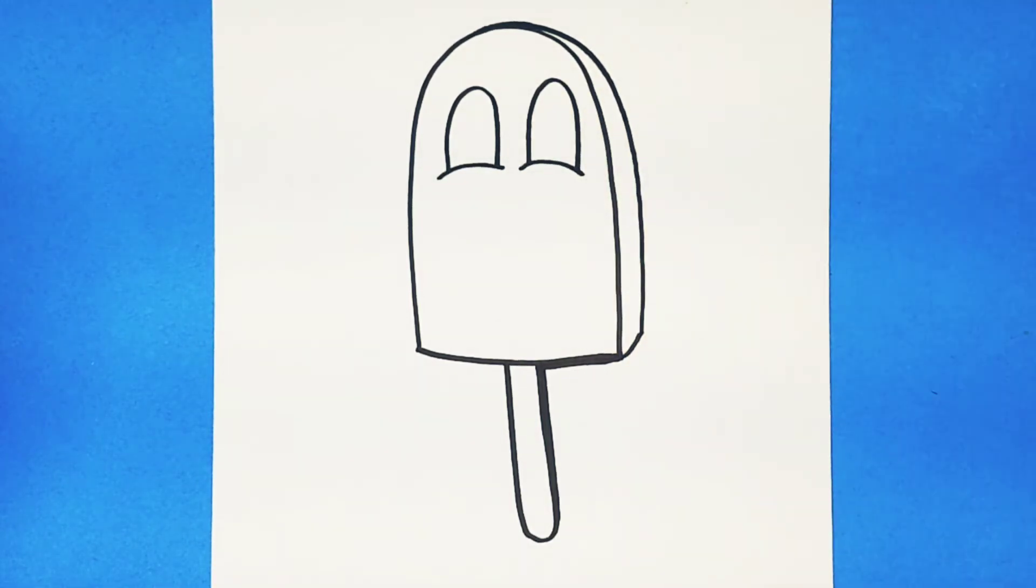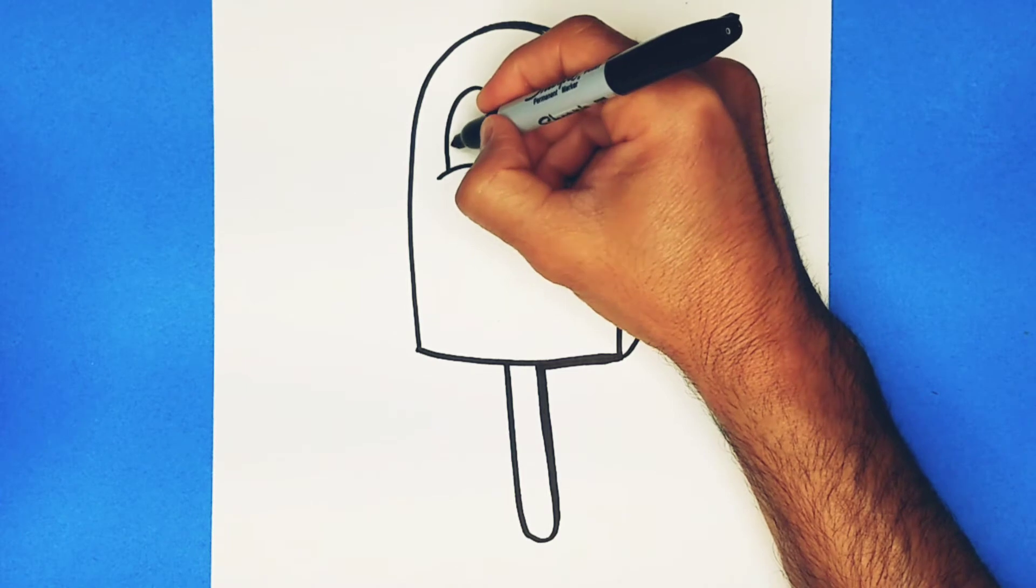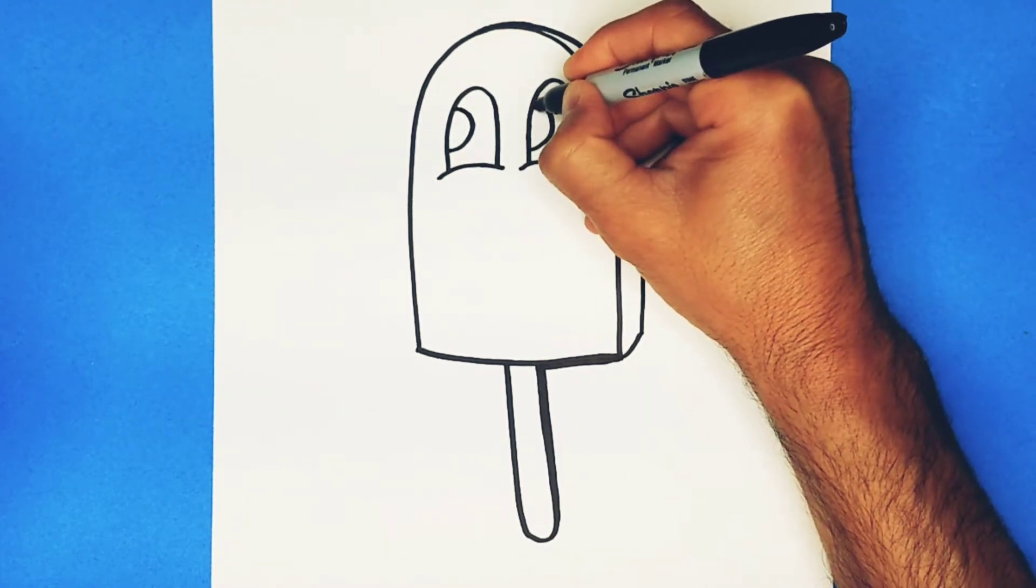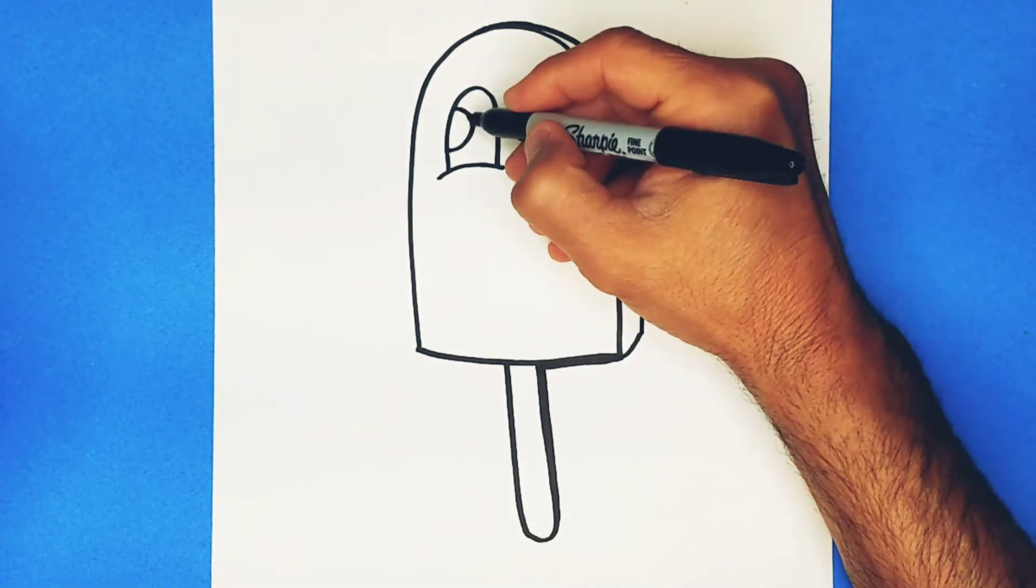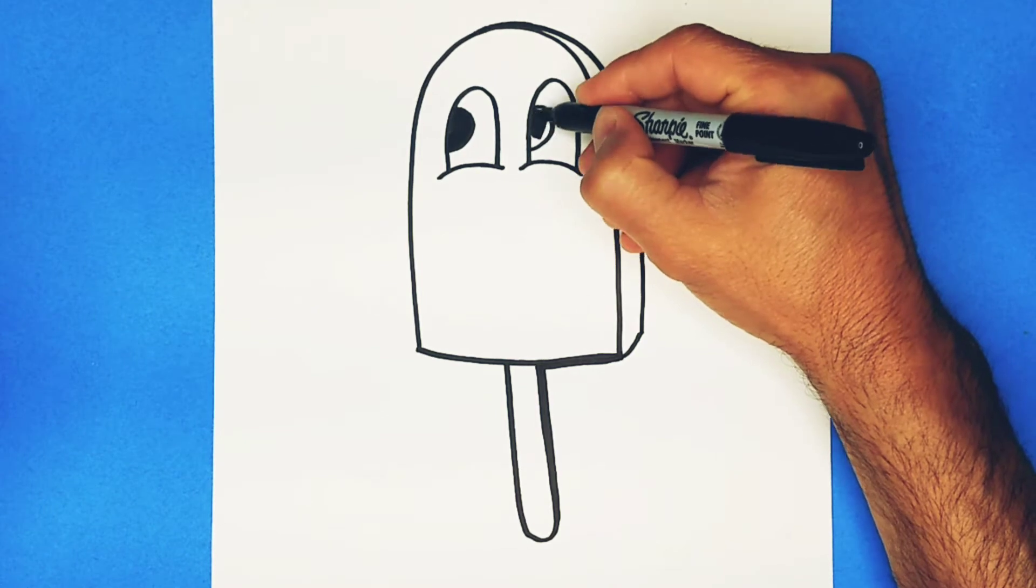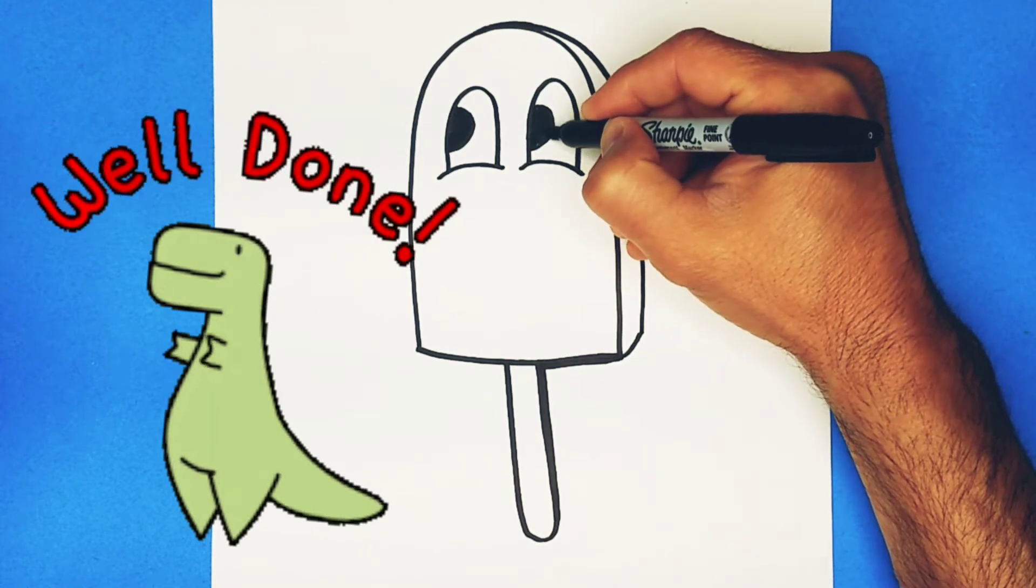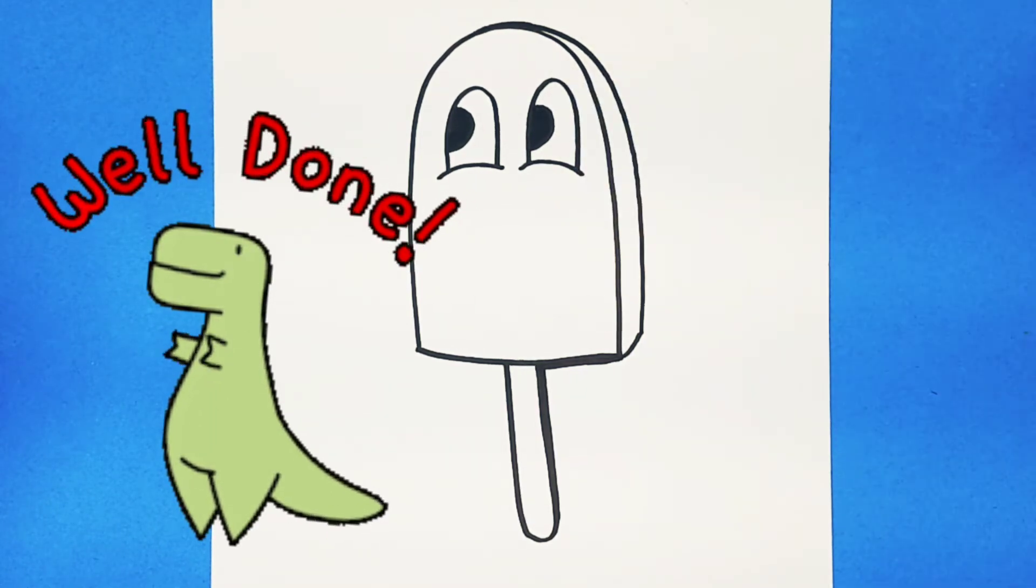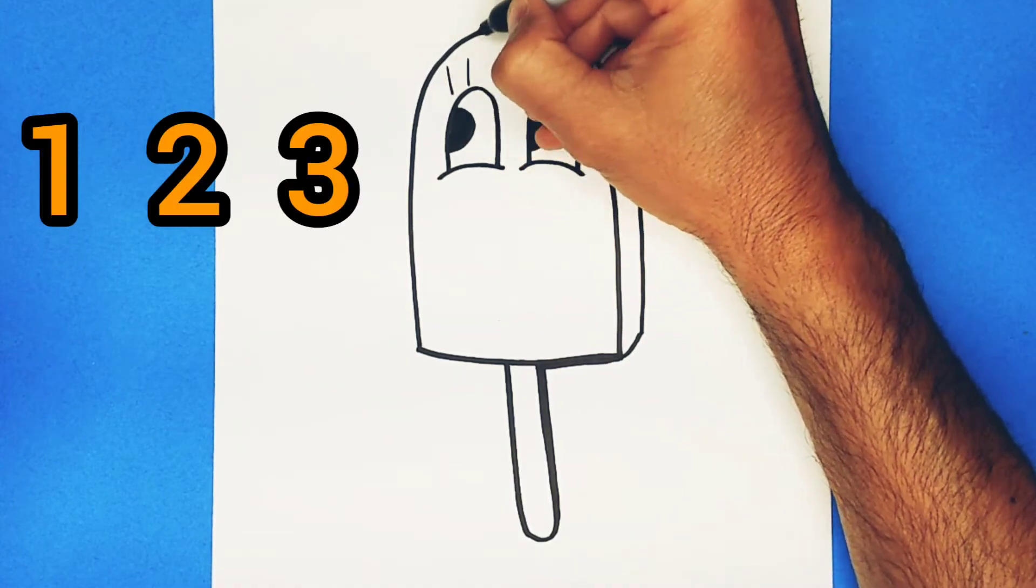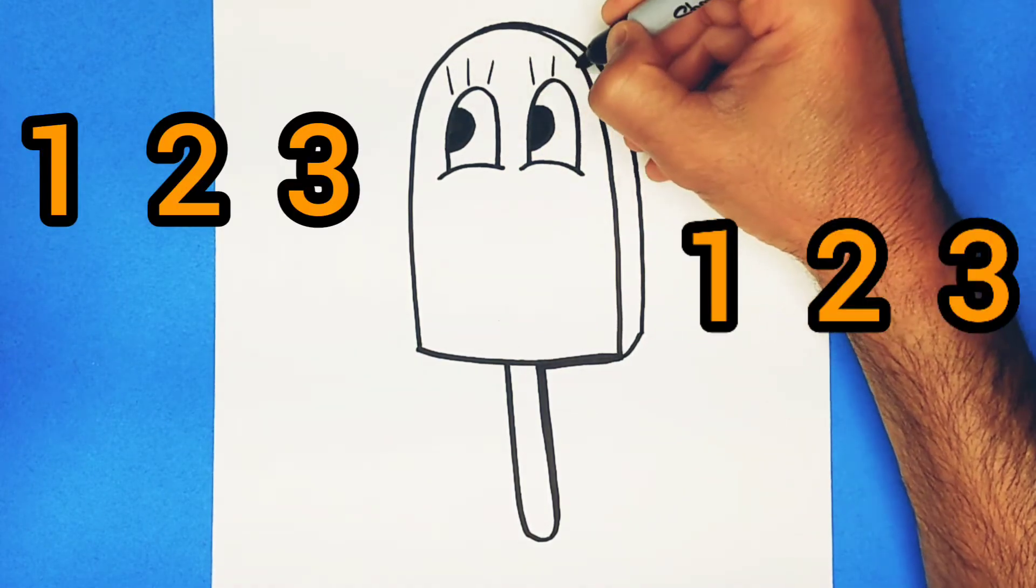I'm going to give her two big semicircle eyes here and we're simply going to fill it in. You guys are doing a great job, we're animating, we're making Ice Cream Pop Girl come to life. Now we're going to give her some nice eyelashes. One, two, three. One, two, three. That makes her cute.